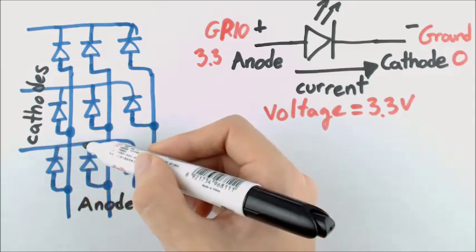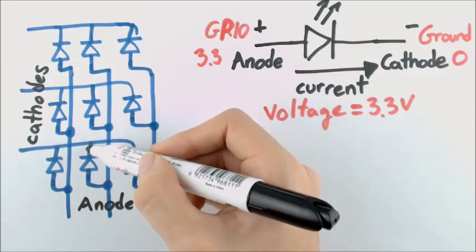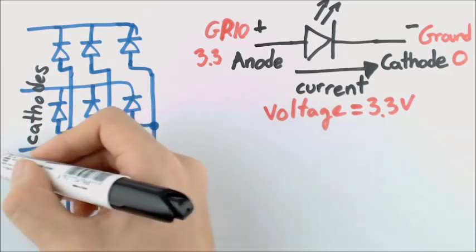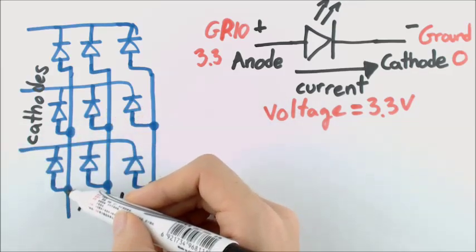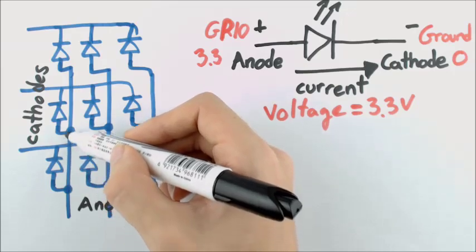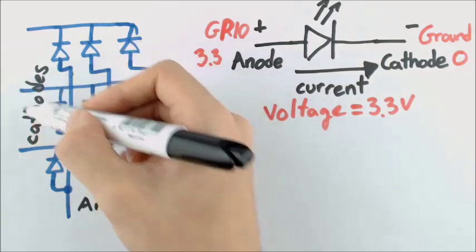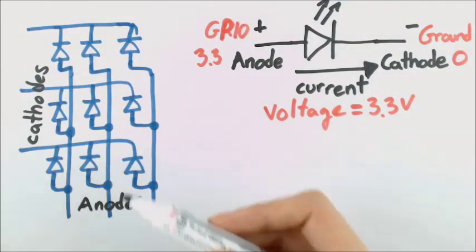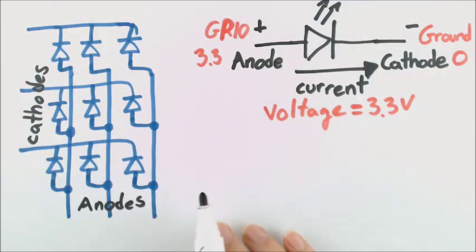It can't go backwards because we already said that we can't have a current go this way through an LED. So if it picks this LED, it has to go at the cathode. If it doesn't take that junction, it would keep on going straight to the electrical current. It could take that one. If it doesn't take that one, then our last pick is right here.